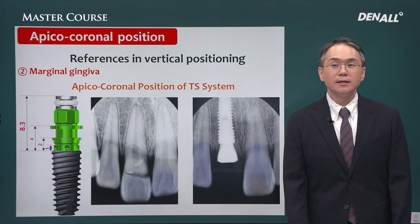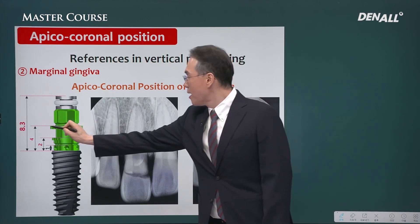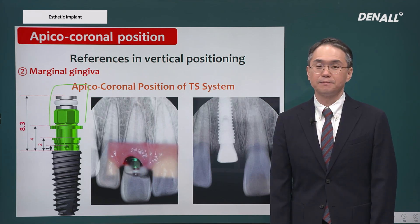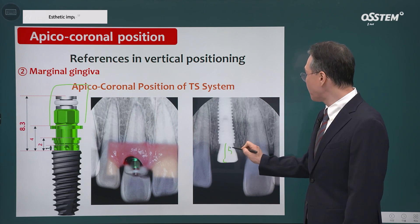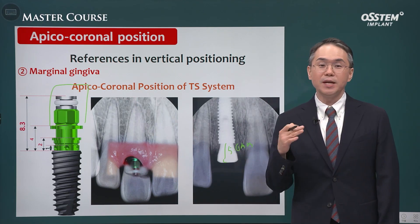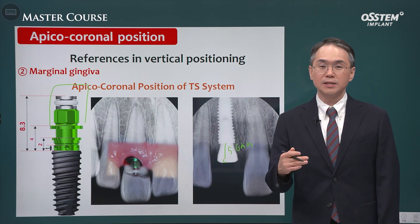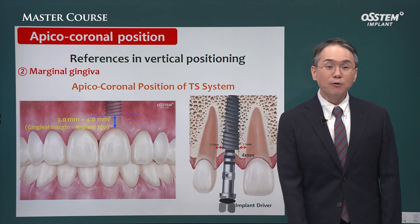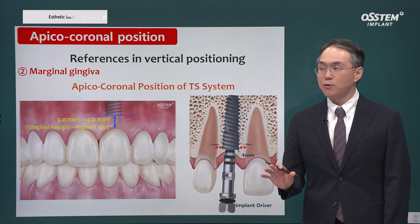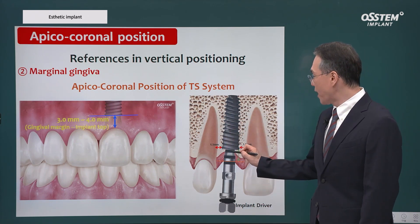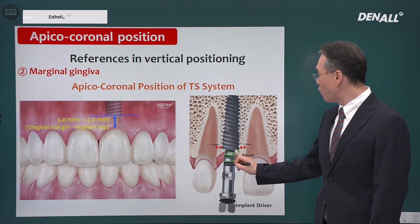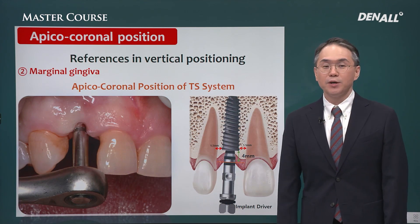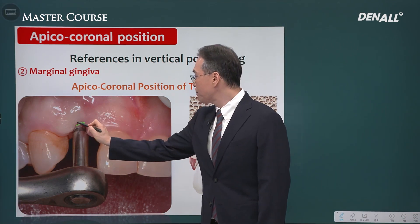When you use the TS3 pre-mounted type implant, from the implant top to the mount driver, the distance up to here should be 4 mm — this should be used as a reference for depth control. Regarding healing abutment height: if you use 5.0 mm and 1 mm protrudes from the gingiva, then the distance to the implant top would be 4 mm — ideal. When placing a non-mounted type implant, you use the implant driver to adjust the depth, and you can use the scale on the ruler with 1, 2, 3, 4, and 5 mm markings. From the most apical position to the implant top, if you set it as 4 mm, it will be the ideal vertical depth.